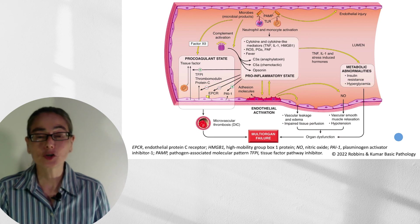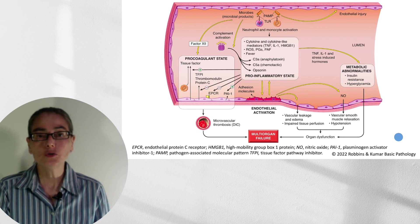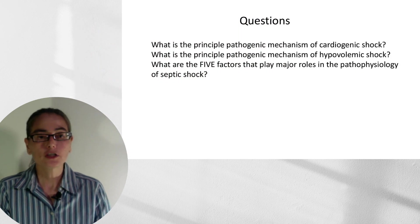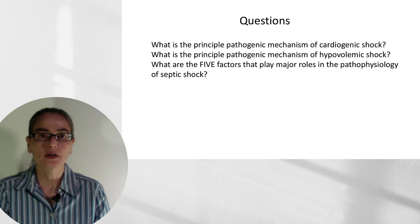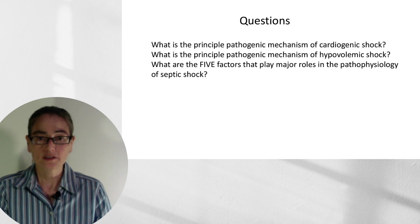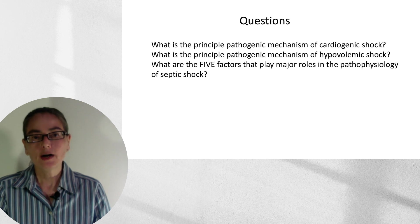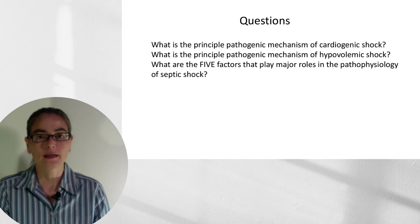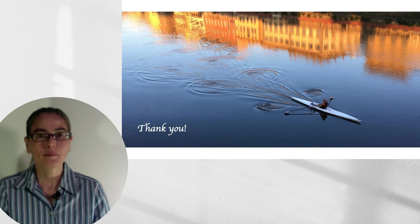This figure really has everything you need to know, and I encourage you to use it as a study guide. To finish, here are three review questions: What is the principal pathogenic mechanism of cardiogenic shock? What is the principal pathogenic mechanism of hypovolemic shock? And not just to list, but to understand the five factors that play major roles in the pathophysiology of septic shock and their complex interplay. The figure will be very useful for that. Thank you for your time, and I hope you found this useful.